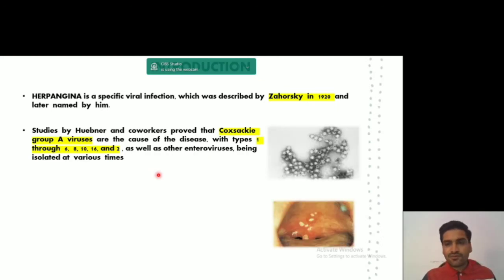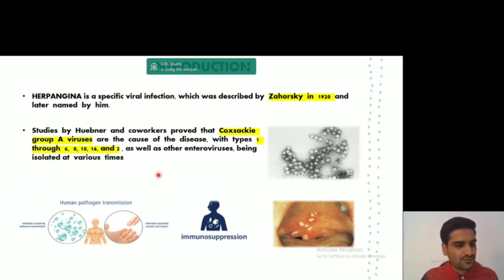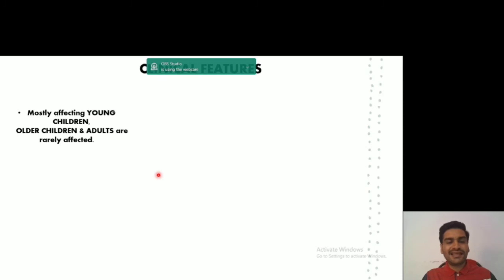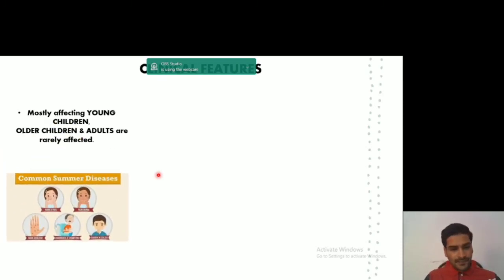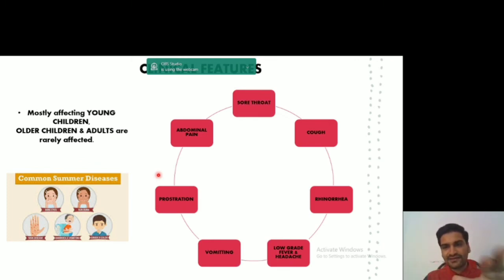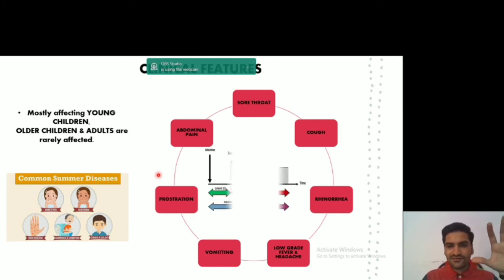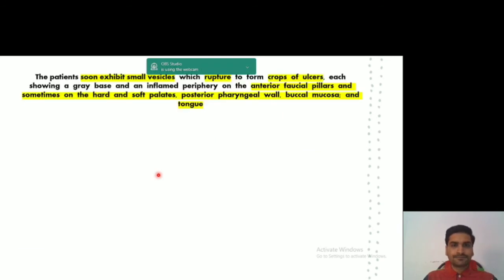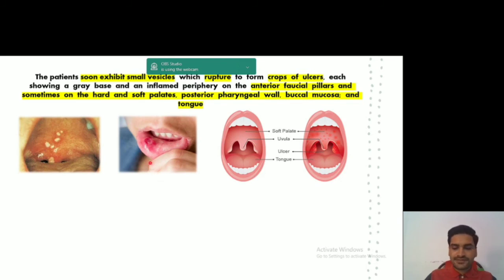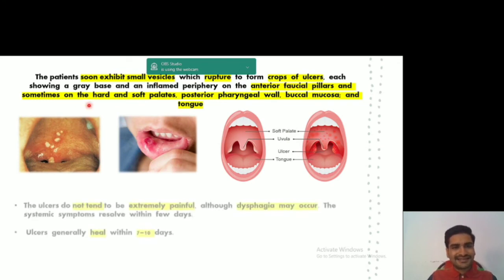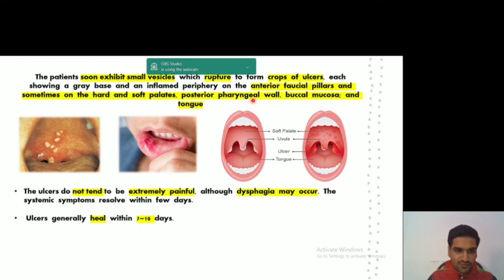For a quick revision: herpangina was described by Zorazky. It is caused by Coxsackievirus Group A, a single-stranded RNA virus, leading to vesicle formation. It is transmitted through direct contact and mainly affects young children; older children and adults are rarely affected. It is known as a common summer disease. Initial clinical features include sore throat, cough, fever, vomiting, and abdominal pain. The incubation period is 2 to 10 days.